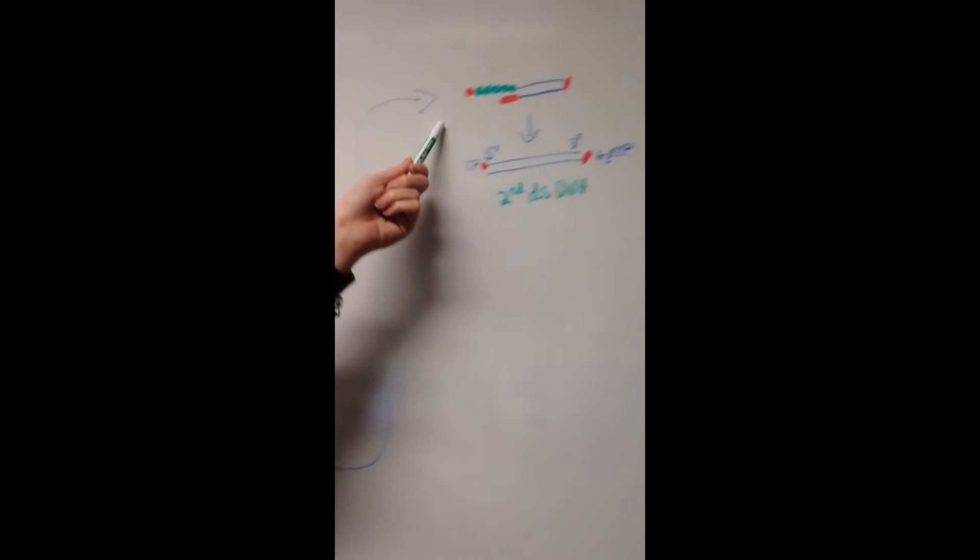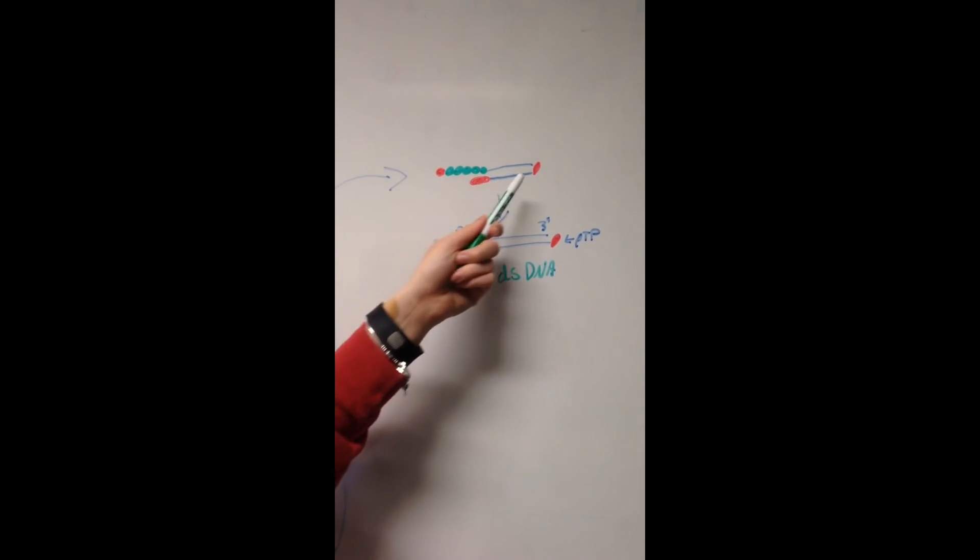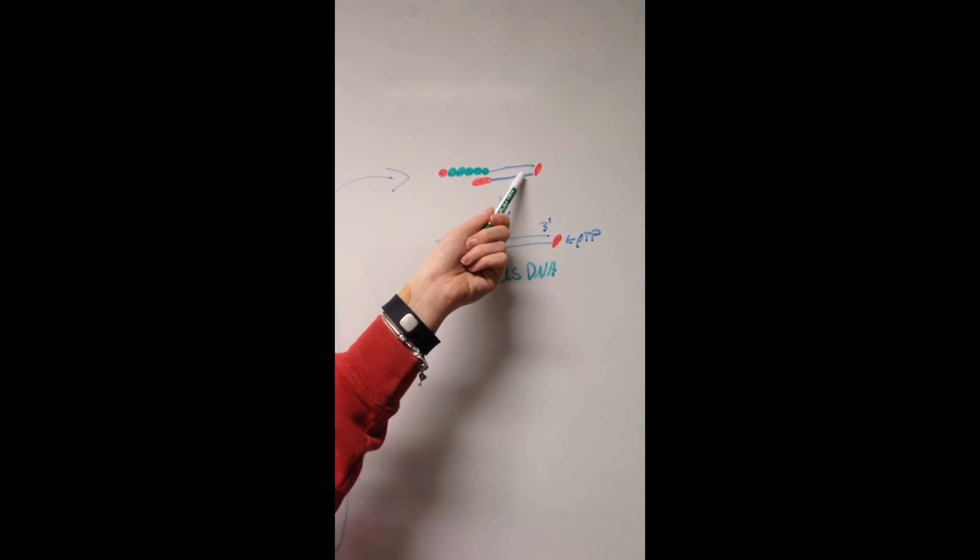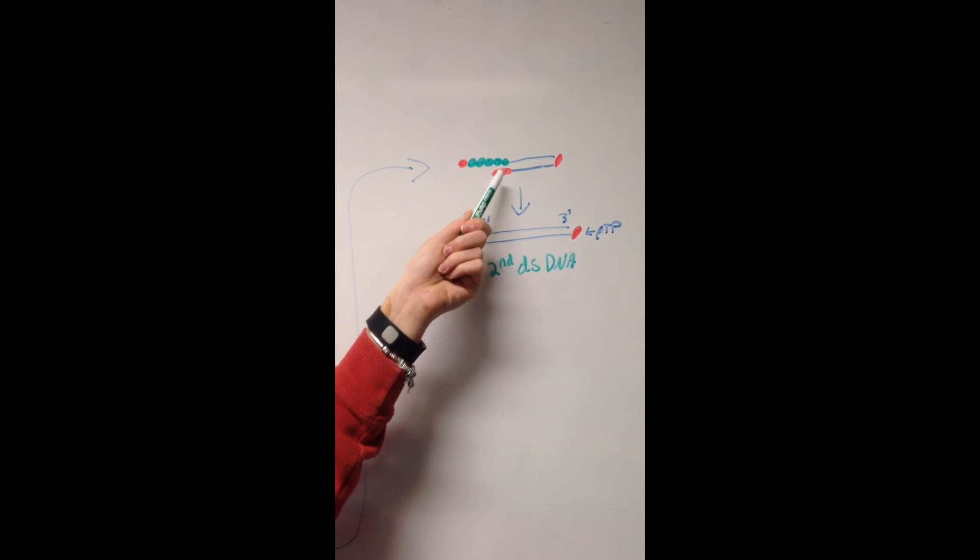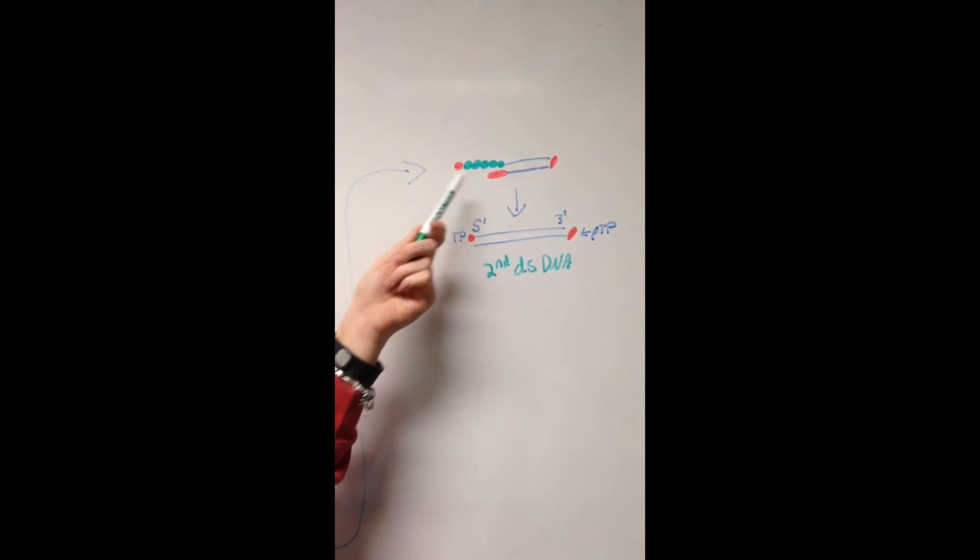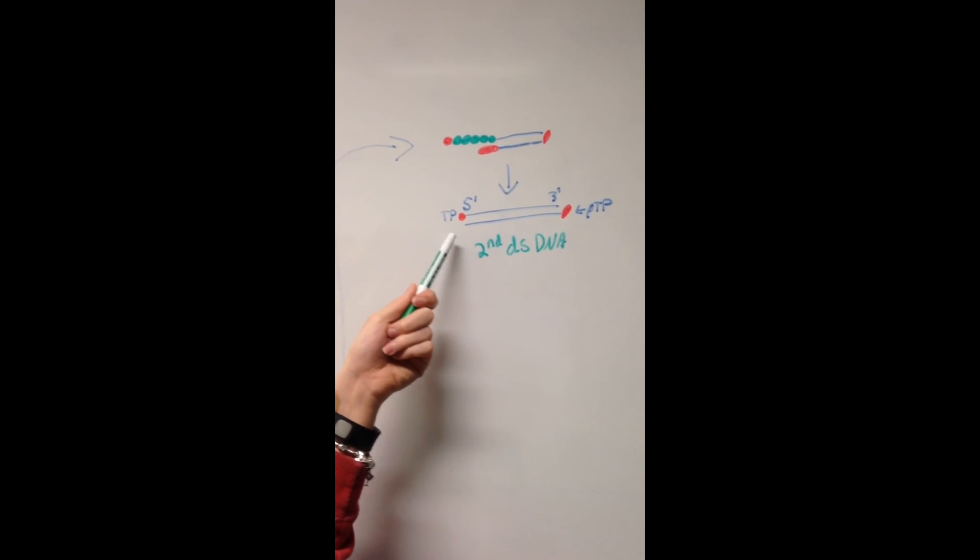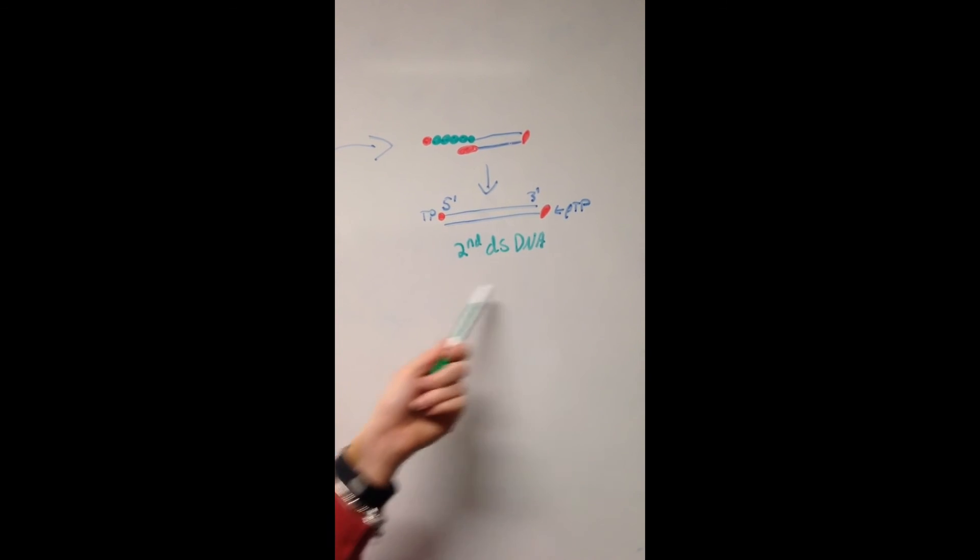The polymerase with the preterminal protein bind to this strand and begin the process all over again, removing the DNA binding protein as it goes. A second double-stranded DNA is now produced and this process can begin all over again to replicate more genomes.